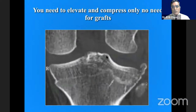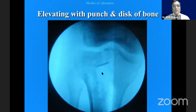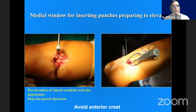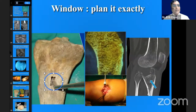This fracture with a roof collapse of the complete condyle would be elevated very nicely and your punching force has to be placed correctly. This requires imaginative elevation because the fragment is very small — either directly look into the joint or compress the joint, then get the fragment back into position. Many times elevating with a punch and a disc of bone is quite useful, especially with multi-fragmented depressed fragments.